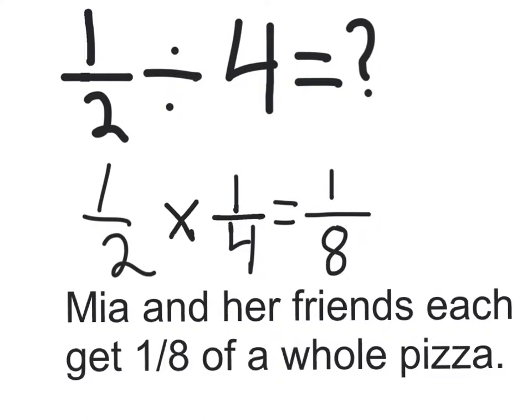So, four, the divisor, is equal to four over one. When you're dividing fractions, you always want to multiply by the reciprocal of the divisor. The reciprocal means just flipping the number around. So, if it's four over one, it will be one over four.